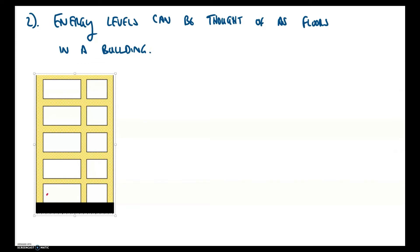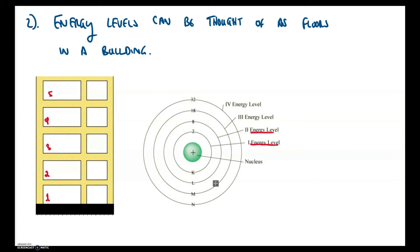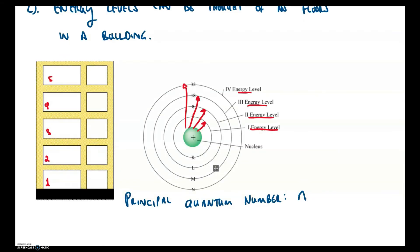Think of energy levels as floors in a building: first floor, second, third, fourth, fifth, and so on. You can't exist between floors — elevators don't stop on the fourth-and-a-half floor. We look at energy levels the same way: first, second, third, fourth, each representing a distance from the nucleus. The farther away from the nucleus you are, the higher your energy. We represent this with the principal quantum number, lowercase n, which can be any whole number from 1 up to 7 — and notice there's a connection between that number 7 and the number of rows in the periodic table.